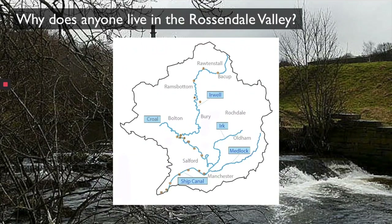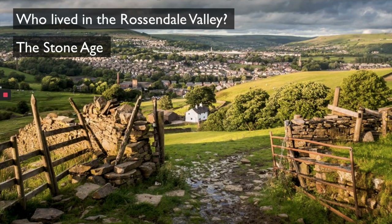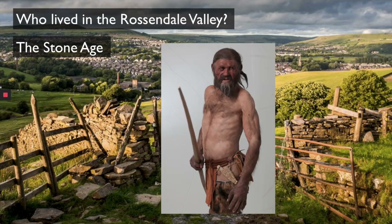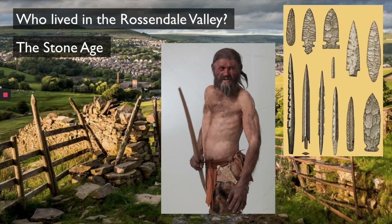Now we've got the context of the River Irwell and the Rossendale Valley, let's have a look at the types of people that have settled here, starting with the Neolithic times over 10,000 years ago. The first people to settle in the valley would have been in the Stone Age — up to 10,000 years ago. Now how do we know that people lived in the valley at this time? In the valley we found tools made out of flint, which are the tools that people used for everyday life 10,000 years ago.